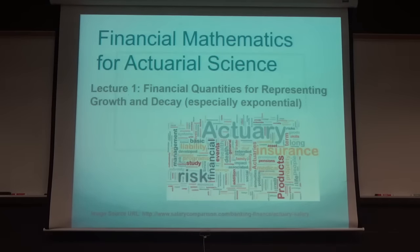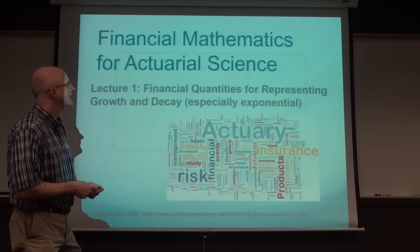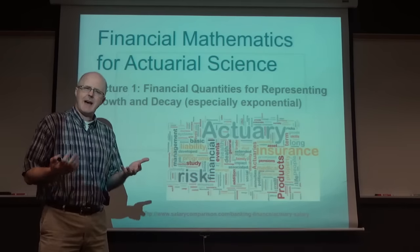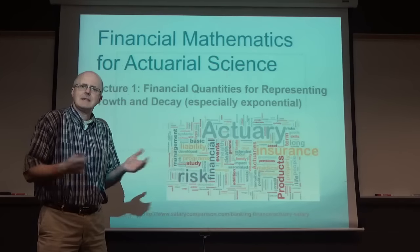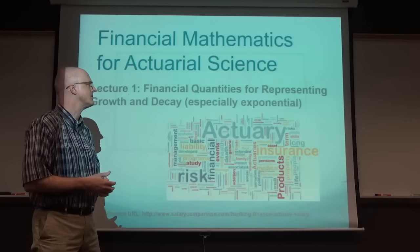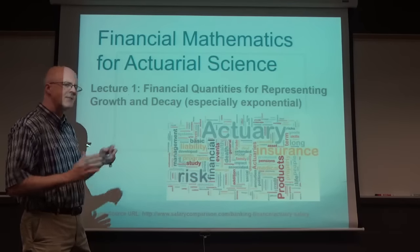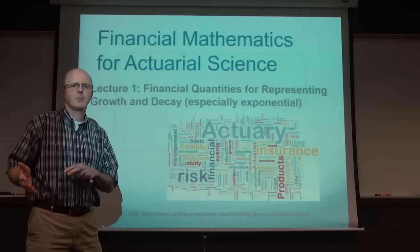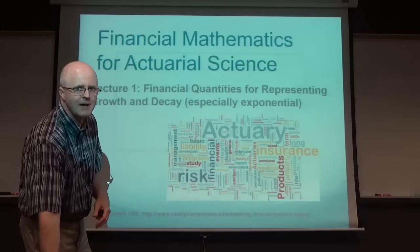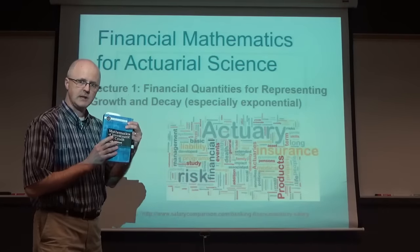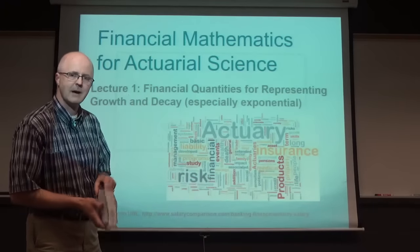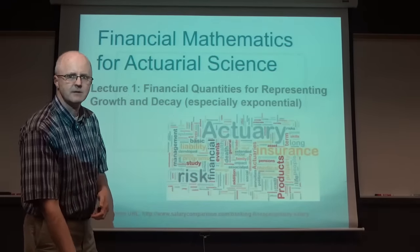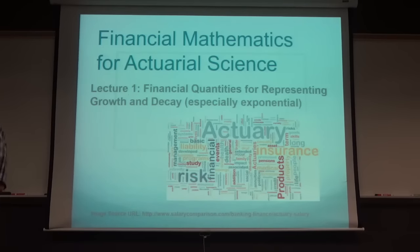Lecture one is about financial quantities for representing growth and decay, especially exponential growth and exponential decay. We're going to talk about how we represent these kinds of quantities, especially in finance. I will mention real life practical realities from time to time, but you'll get more of those from reading the book - it talks about things like treasury bills and bonds. I'm going to focus more on the math in these lectures.